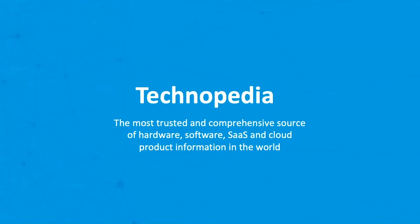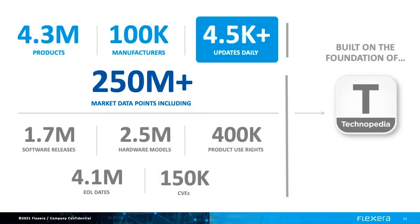How is this all possible from a single solution? IT Visibility's normalization and enrichment is powered by Technopedia — the most comprehensive and trusted source of IT asset data in the world. Technopedia is incomparable, not only in the breadth and coverage of 4.3 million products and 100,000 manufacturers, but the real key is that Flexera's research teams make over 4,500 updates daily.